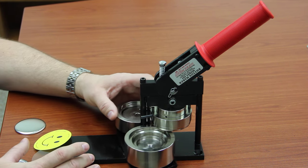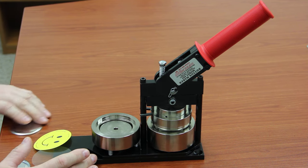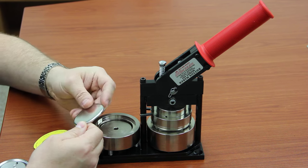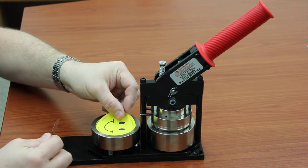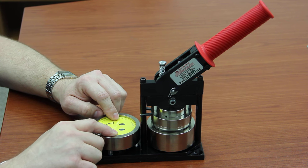First you want to turn the turntable so the pickup station is in front of you. Take a shell sharp edge down, make sure you only have one, and place it in the pickup die. Then take your graphic mylar and orient these so they're facing you.